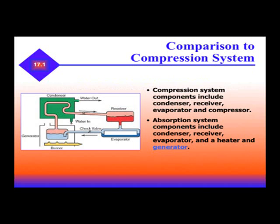Let's think back to the compression system. The compression system components include condenser, receiver, evaporator, and compressor. An absorption system includes condenser, receiver, heater, and a generator.